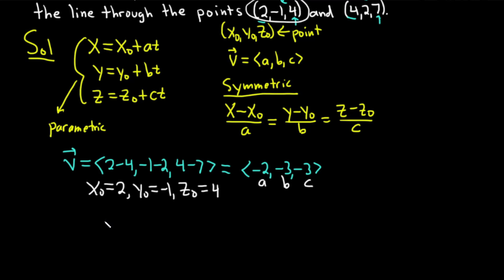So let's write down the parametric ones. It's x = x₀, which is 2, plus, and then a is -2, so it'll actually be minus 2t. And then y = y₀, which is -1, plus bt, but b is negative, so it's minus 3t.